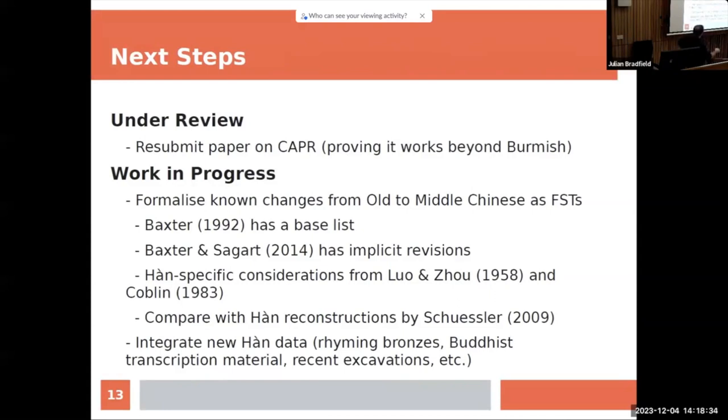So, starting from the base list we get in Baxter, the revisions that they've made in 2014, there are some books that are specific to the Han that we've collected data from. And then there's material that we've started collecting and that we want to integrate in that system. It's not super easy to integrate, because how do you integrate rhyming data in a tree like this? So, rhyming bronzes, transcription, so translation of Buddhist texts into Chinese contains a lot of Indic words for which we know the phonology. And so it tells us something about the Chinese phonology and recent excavation, et cetera. So that's where we're at. It's a very work in progress point in time.